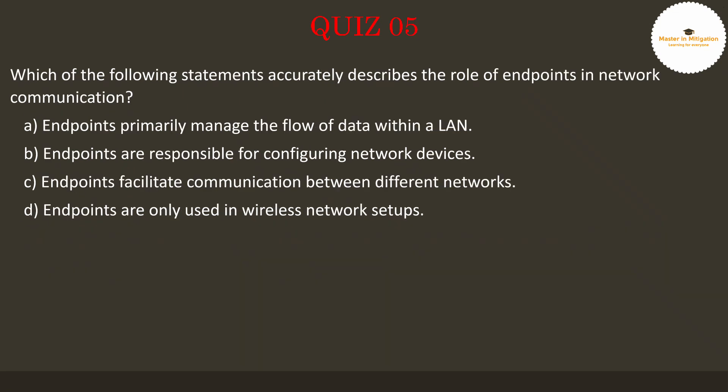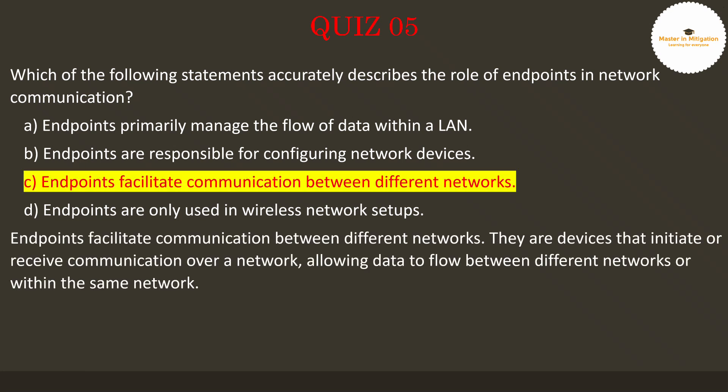Let's go to question 5. Which of the following statements accurately describes the role of endpoints in network communication? Pause the video now to select the best answer. The answer is C — endpoints facilitate communication between different networks. They are devices that initiate or receive communication, allowing data to flow between different networks or within the same network.